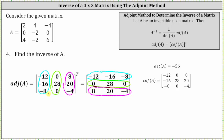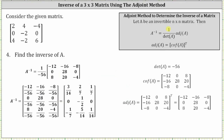Now that we have the adjoint of A and the determinant, we can use the formula to find A inverse. The determinant of A is negative 56, giving us one divided by negative 56 times the adjoint of A. Performing the scalar multiplication and simplifying the fractions, the first row of A inverse is three fourteenths, two sevenths, and one seventh. The second row is zero, negative one half, zero. And the third row is negative one seventh, negative five fourteenths, and one fourteenth.